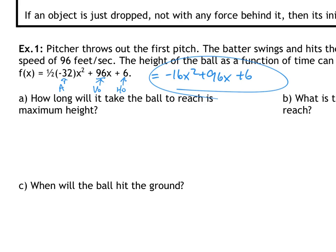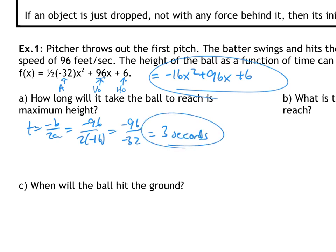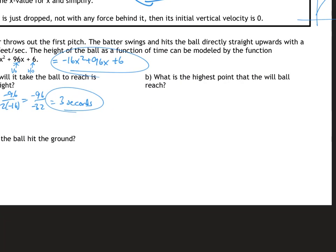The equation I'm going to use is negative 16x squared plus 96x plus 6. Part a: how long will it take for the ball to reach its maximum height? I want the vertex, so t equals negative b over 2a. That gives me negative 96 over 2 times negative 16, which is negative 96 over negative 32, and that equals 3 seconds. After 3 seconds, the ball will reach its maximum height.